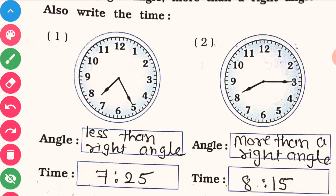Looking at the angle between the hands in this first clock, write here: less than right angle.